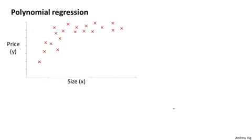Closely related to the idea of choosing your features is this idea called polynomial regression. Let's say you have a housing price data set that looks like this. Then there are a few different models you might fit to this. One thing you could do is fit a quadratic model like this. It doesn't look like a straight line fits this data very well. So maybe you want to fit a quadratic model like this, where you think the price is a quadratic function. And maybe that will give you a fit to the data that looks like that.